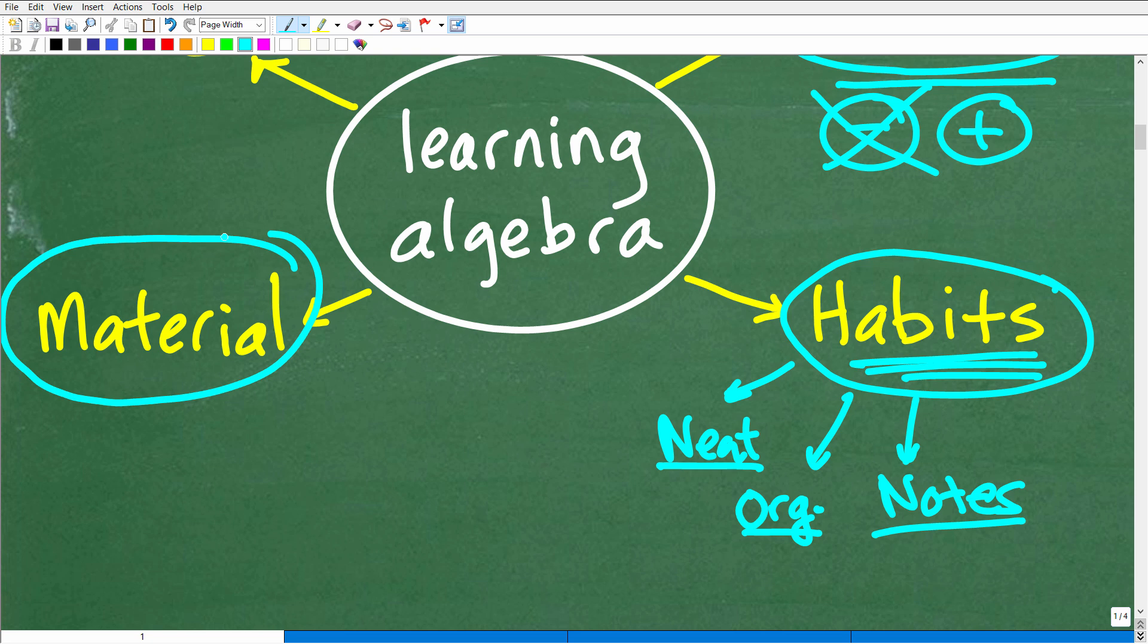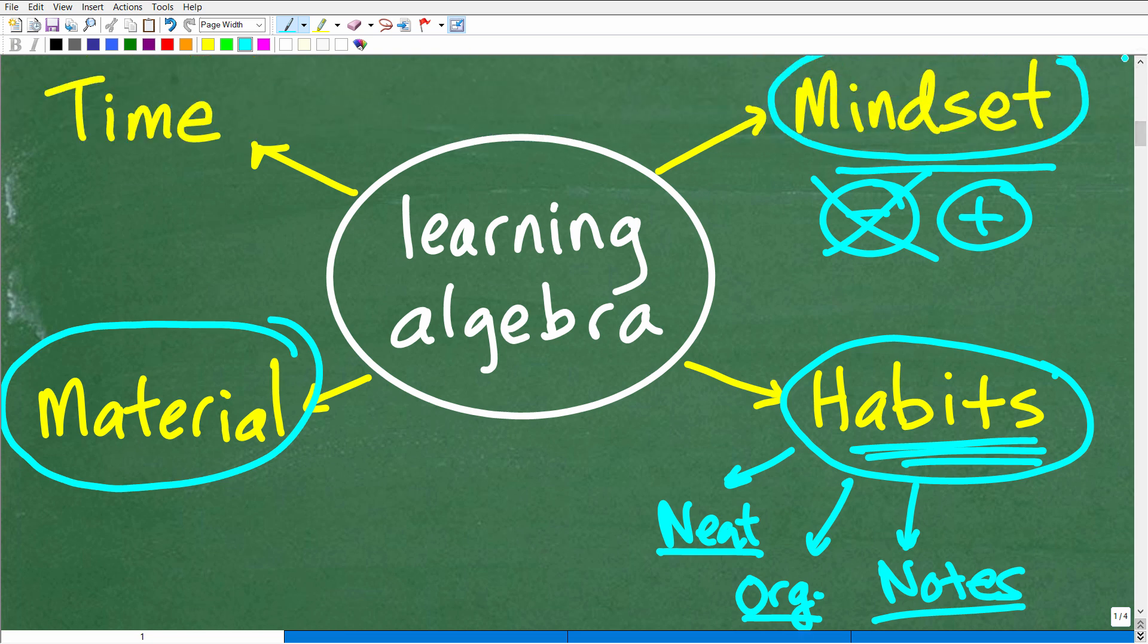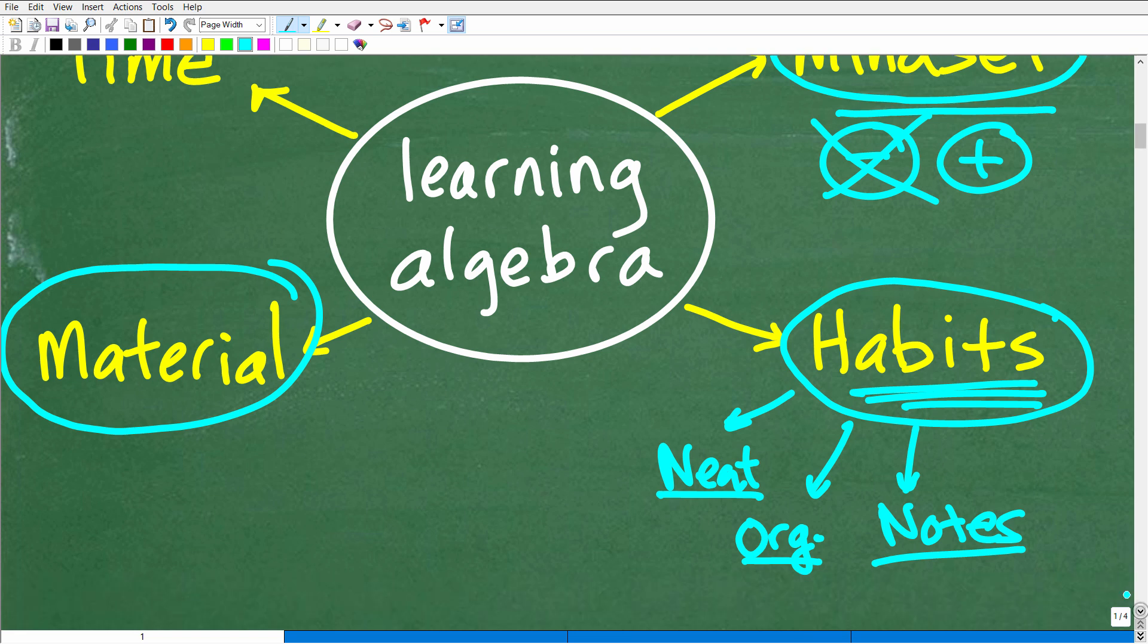Now, the next thing that I'm going to talk about, and of course we're talking about learning algebra as an adult, is material. And this is another huge thing that can really trip you up. So if you happen to be like, yeah, I'm going to learn algebra. I'm going to go and pick up a little book for $1, how to learn algebra in 10 days, something like that. That's okay.